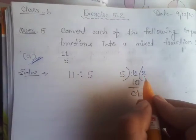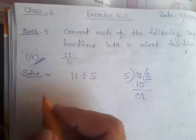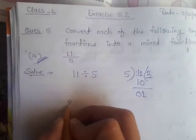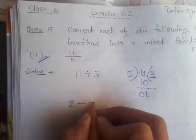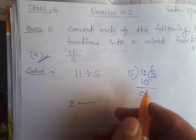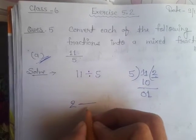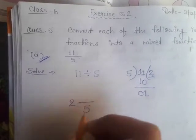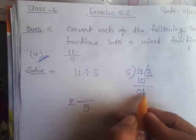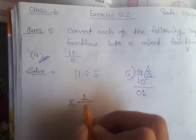So 2 goes in as whole numbers, and divisor is 5 and remainder is 1, so numerator.